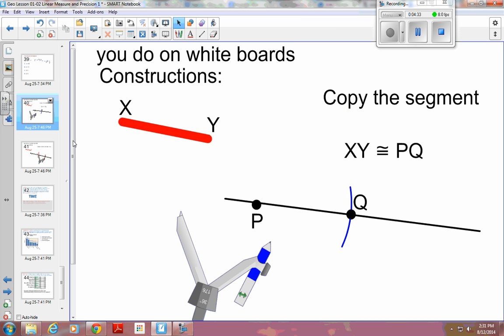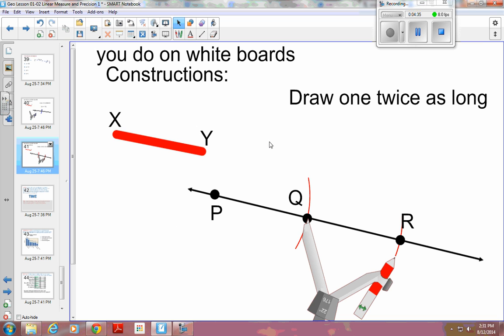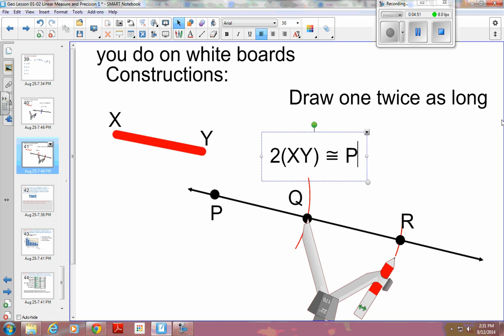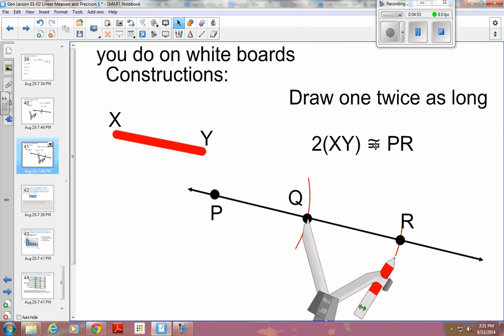Okay, so that's a copy, and on this one, if I take two times the length of XY, I should be congruent, same measure as P to R. So twice the length of XY should be the same measure as PR.